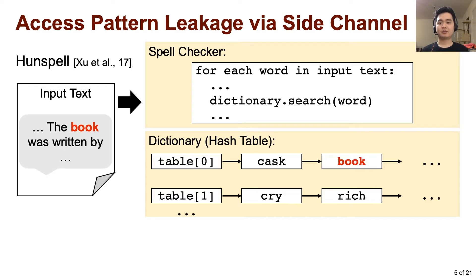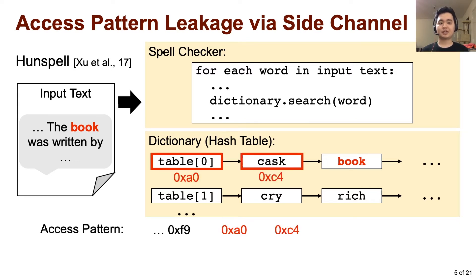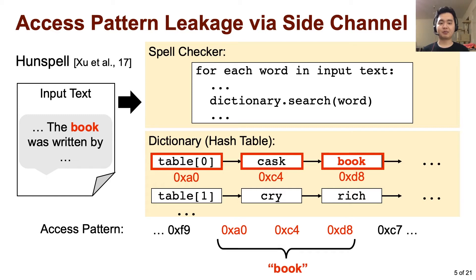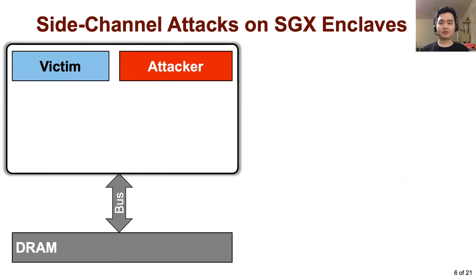For example, if the text contains the word 'book', while Hunspell iterates the hash bucket to search for the word, it will sequentially access specific addresses. So if the attacker can observe the memory access pattern of the victim, she can infer the data without actually looking at the data. A lot of side-channel attacks have been performed on SGX enclaves, exploiting adversarial or shared on-chip components to leak the access pattern of a victim.